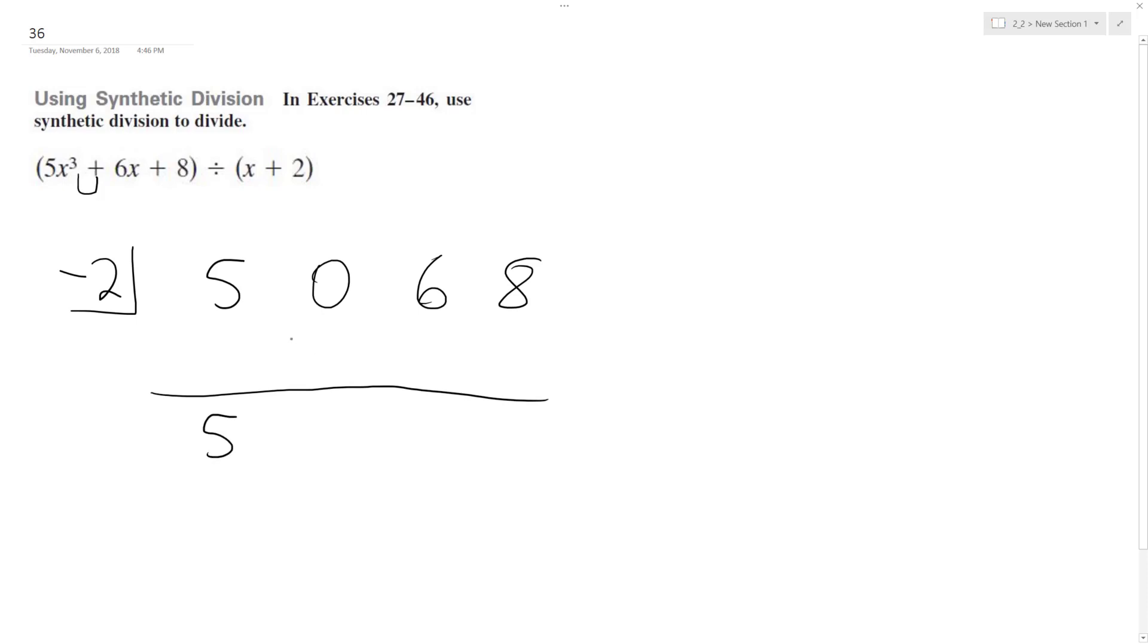So bring this down. We bring 5 down, and then we get negative 10, negative 10, 20, 26.